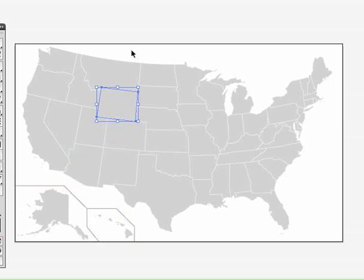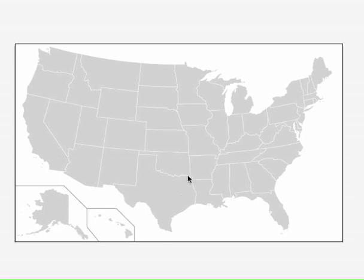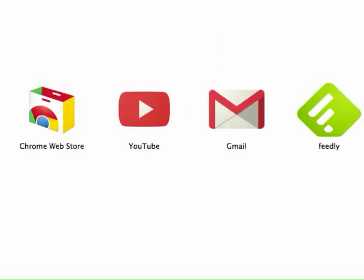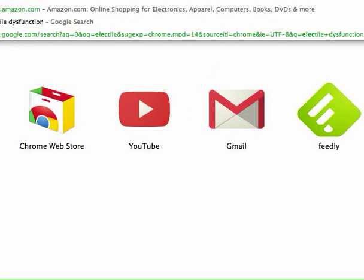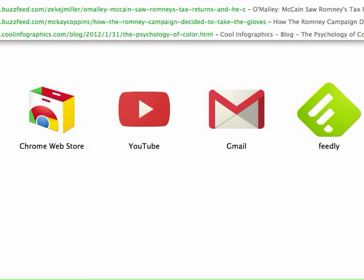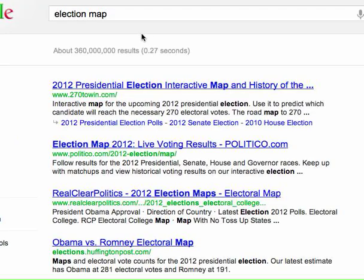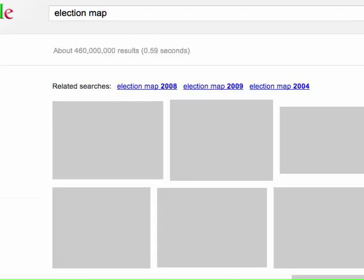With this kind of map, we can analyze different kinds of maps we've seen in the past. The most famous type of map that we see is a United States election map.